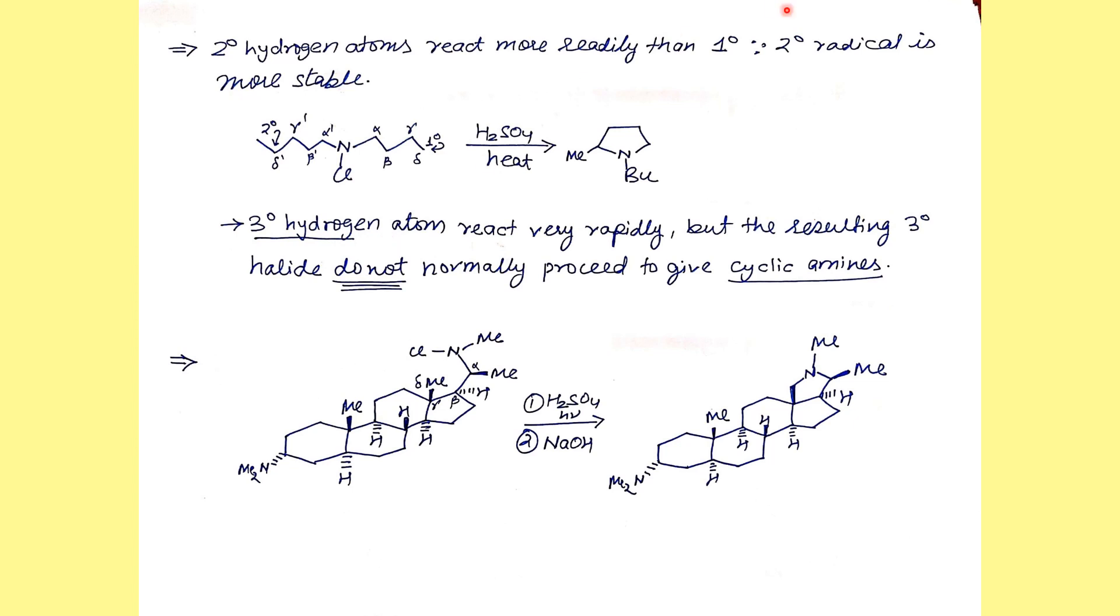Tertiary radicals are more stable than primary, and secondary is also more stable than primary. But even though tertiary hydrogen can be abstracted to give tertiary halide, it does not cyclize to give you amine. Here we see a big molecule subjected to Hofmann-Löffler-Freytag reaction.